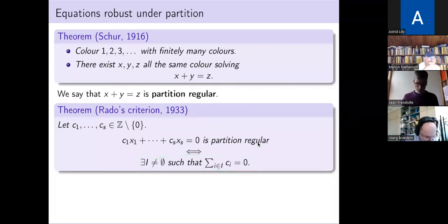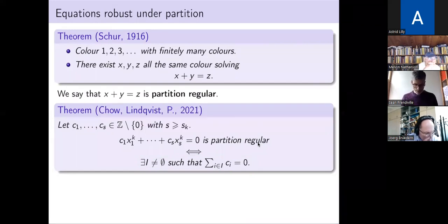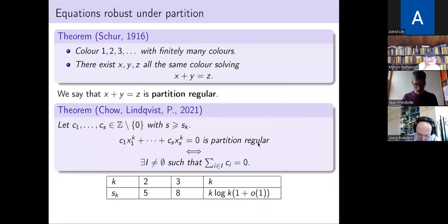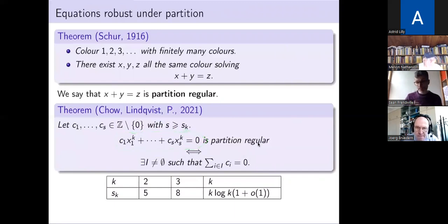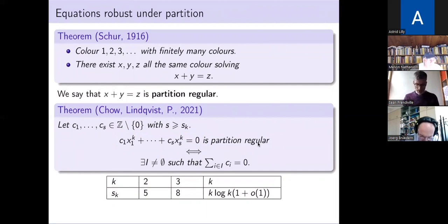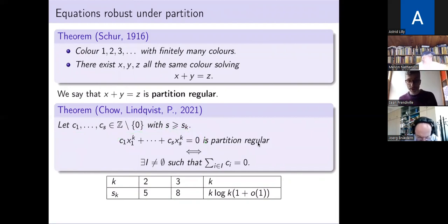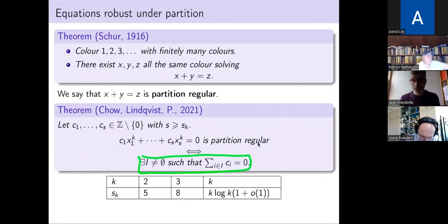That's the end of the story for linear equations in some sense, but with Sam Chow and Sophia Lindqvist we generalize this to higher degree diagonal equations. I take my diagonal form of degree k with fixed coefficients c1 up to cs, and ask: when is this diagonal form of degree k partition regular? It's partition regular if and only if the same algebraic characterization holds — some subset of the coefficients sums to zero.